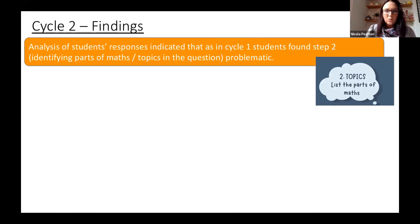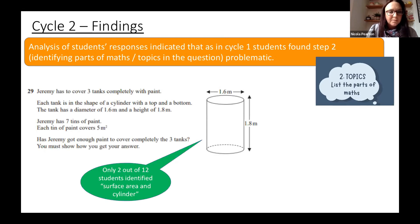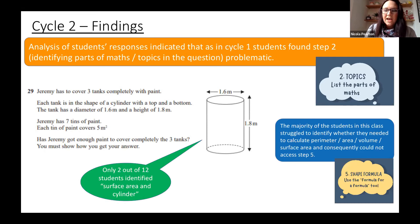We also found that, as we found in Cycle 1, listing the parts of maths was extremely problematic. Students didn't do that well at all, and they didn't make links between topics. Again, as mentioned earlier, that linking in the scheme of work is so important. Just a quick example: of the 12 students who tried this question, only two identified surface area and cylinder, which are vital to answering the rest of the question. I found that with the 12 students in this particular group, there was an issue with actually knowing whether they were doing area, perimeter, volume, or surface area, so straight away they weren't accessing it.